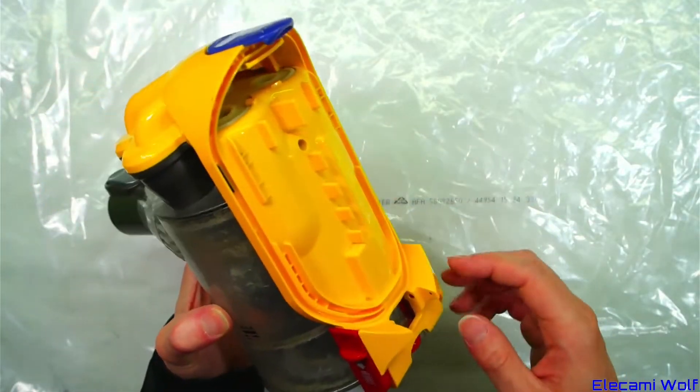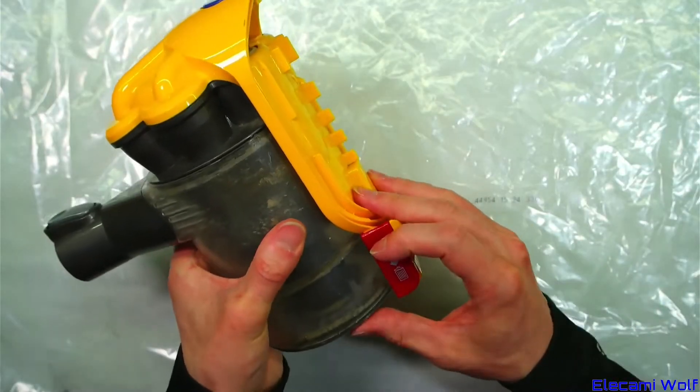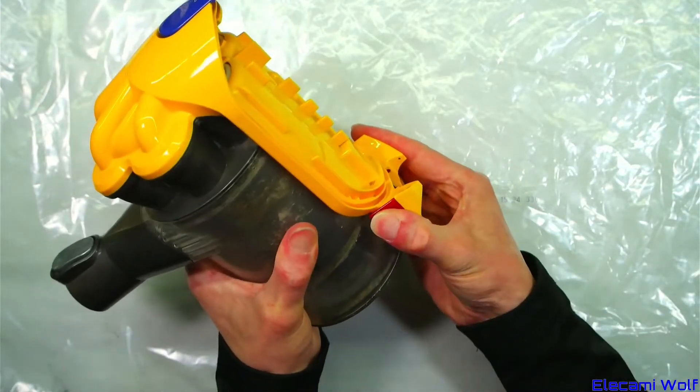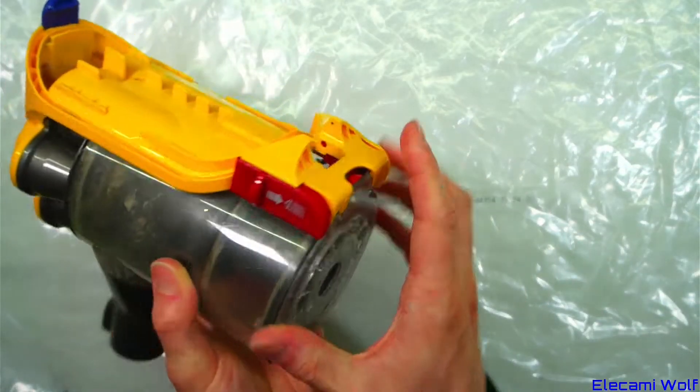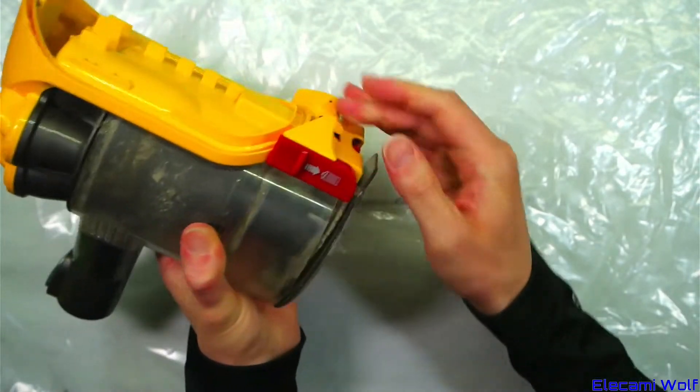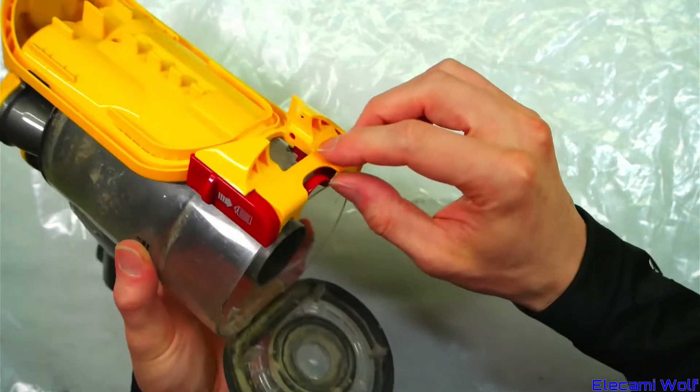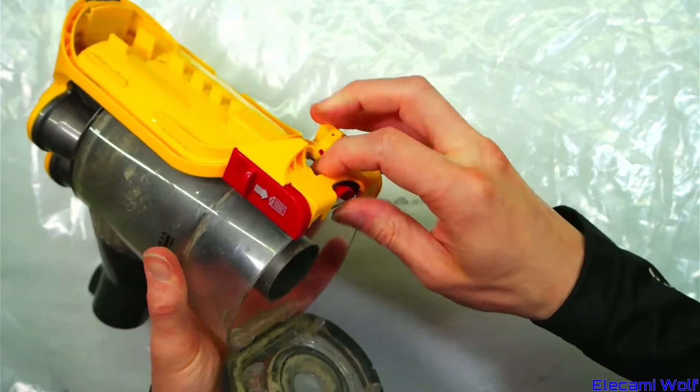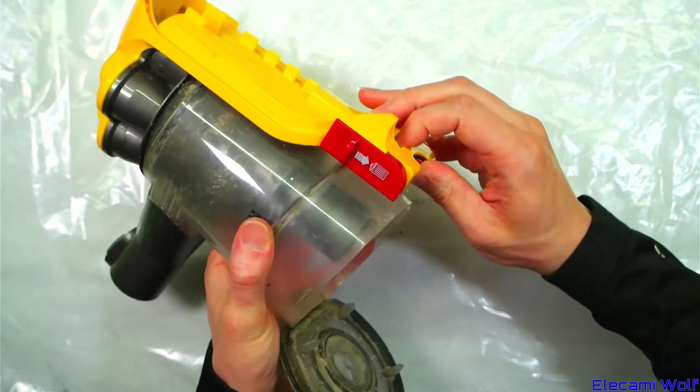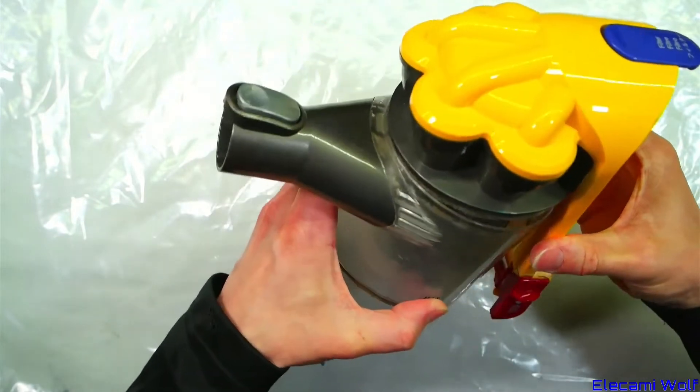Now to get this apart, you release the bottom catch, which is what you normally do for emptying it. Look at that, someone's been sucking up some good stuff. And that reveals this little lever in here, which you can pull back to remove this canister.